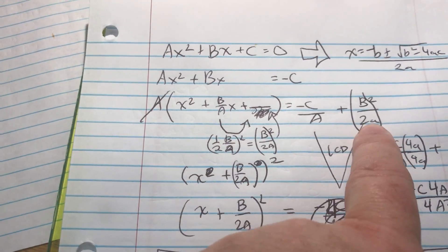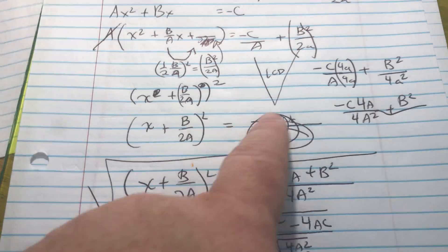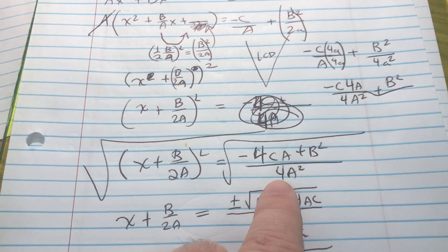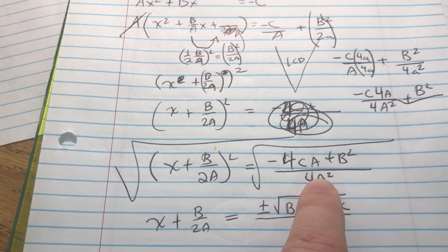Of course you have to do it to both sides in order to make it balanced, and then I went over here and did all that work and kind of got it into the right order, but then hey that's 4a squared on the bottom.